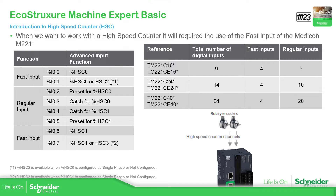If you're using single phase, you have one, two, three, four possible inputs. We're going to cover that later, but this is just a small introduction to the high-speed counter. Here is an example: if you're going to use two incremental encoders, you can have up to two.